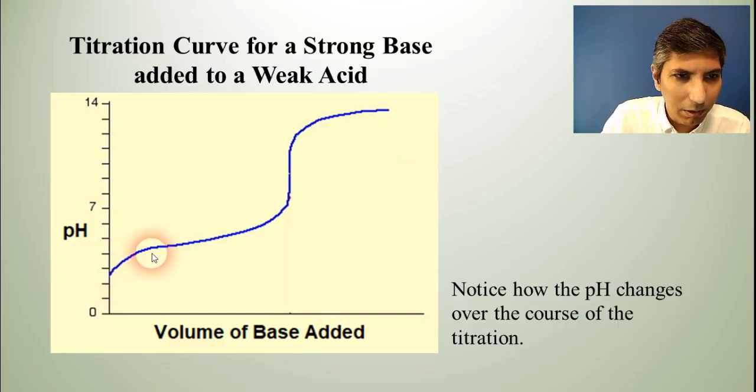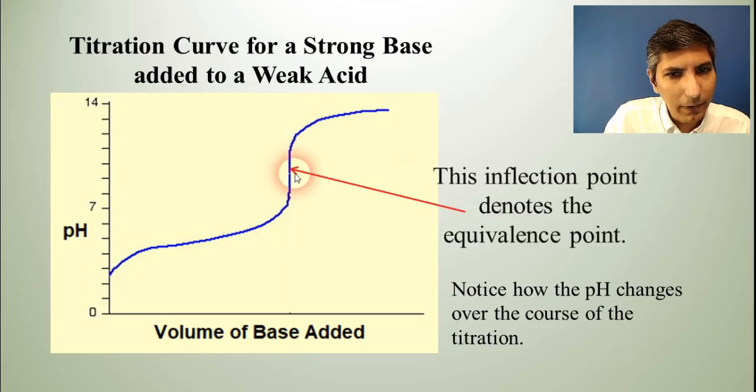And so it slowly goes up, just like it did before. But just like in the last example, it shoots up. We have this S type of a curve in here. It shoots up and right at the inflection point of that S point there, or that S curve, that is the equivalence point.